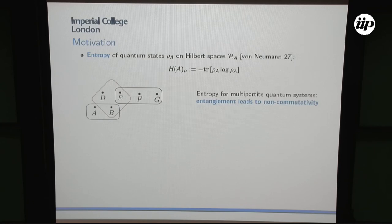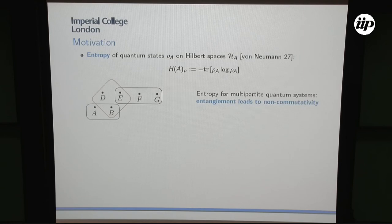For classical entropy, we understand it very well, at least from a mathematical viewpoint. We know how to work with it and derive interesting properties. However, for quantum systems, this is a little less clear. If we stick to one system, everything follows from the classical theory. But if we look at multipartite quantum systems, they can become entangled and correlated in a stronger way than classical systems.